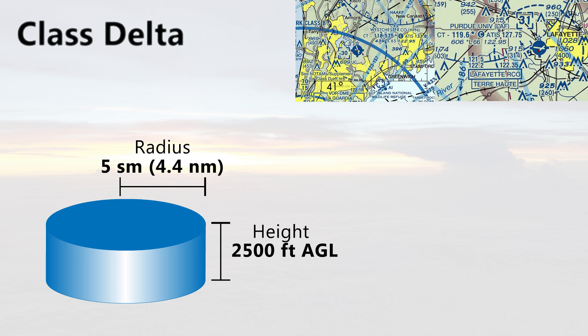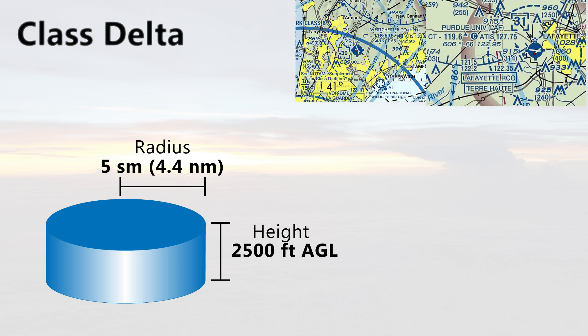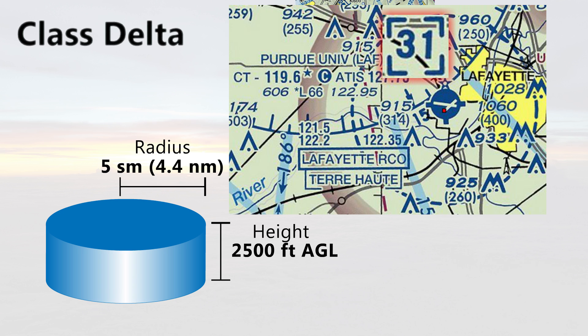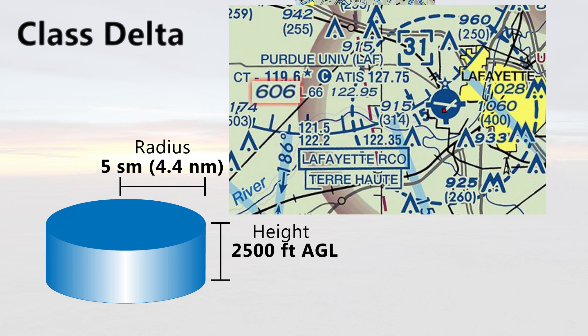Why 5 statute miles? The generic 5 miles is in place to contain the airspace in which the Terminal Area Forecast, or TAF, is valid for. Here is an example of a typical Class D airspace surrounding Purdue University Airport. Class D airports are defined on the sectional chart by a blue segmented line. Here you can see the top of the Class D is designated by two digits and hundreds of feet, indicating the ceiling is 3,100 feet in MSL altitude. The airport elevation is shown here at 606 feet.